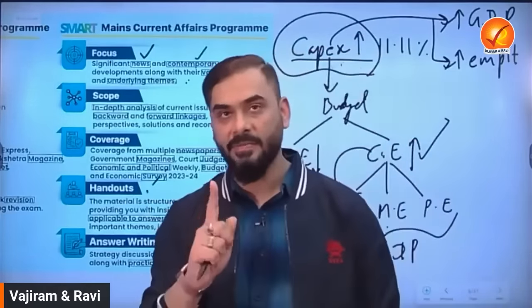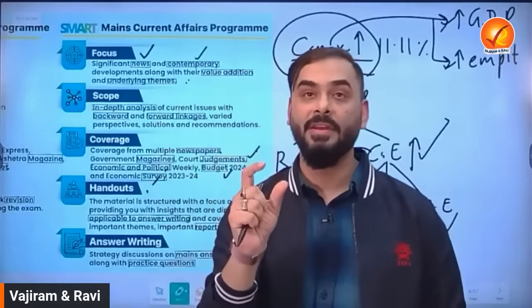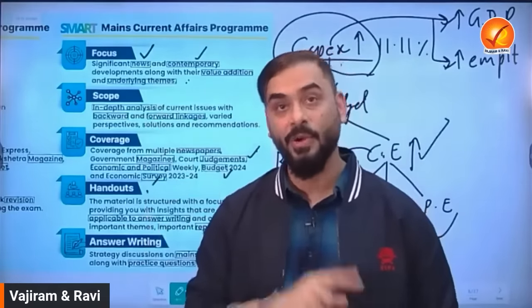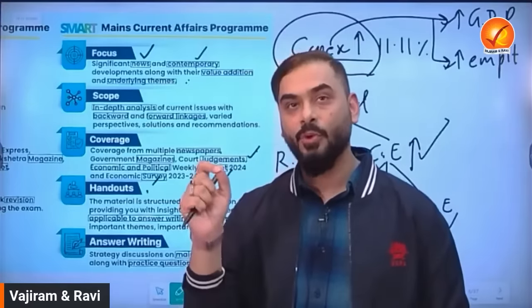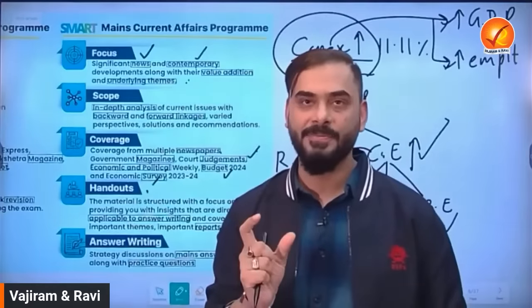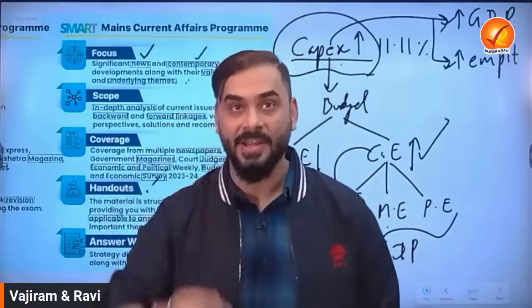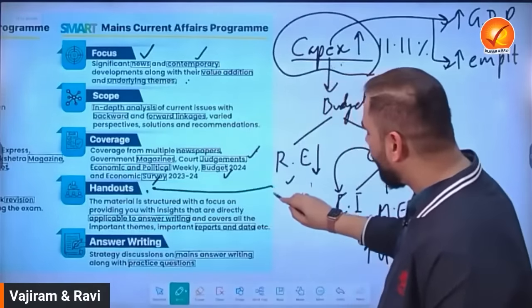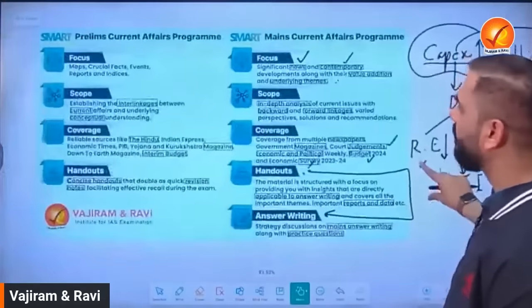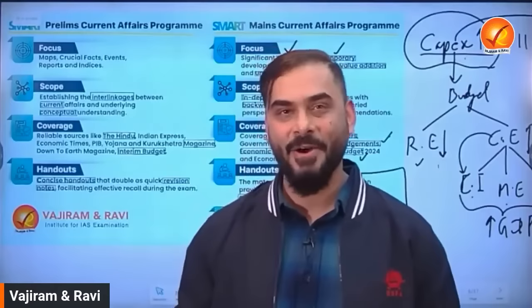The mains handouts are designed differently. When you select a topic like poverty alleviation, you must cover social, economic, political, and international aspects, and quote relevant court judgments. Facts, figures, and analysis are all required. The ultimate aim of the mains handout is to empower you for answer writing — it will directly help you write better answers in the exam.